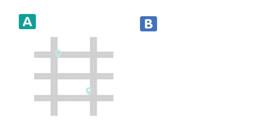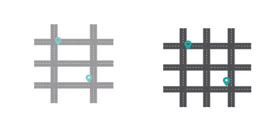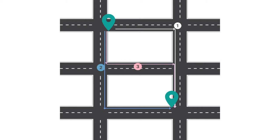Let's compare these two examples. If you were at point A and you were trying to get to point B, you'd have three potential routes. In scenario B, where the blocks are shorter, you have six potential routes.